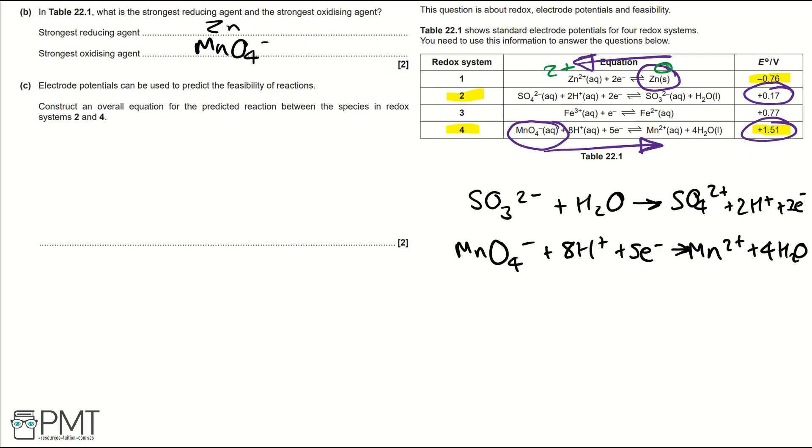When writing an overall equation for these redox systems, you need to look at electrons. So we've got 2 and 5. Therefore, we need to multiply the first equation or redox system 2 by 5. So if we add 5 to each of these, that would make this H+ 10 and we've got 10 electrons then.